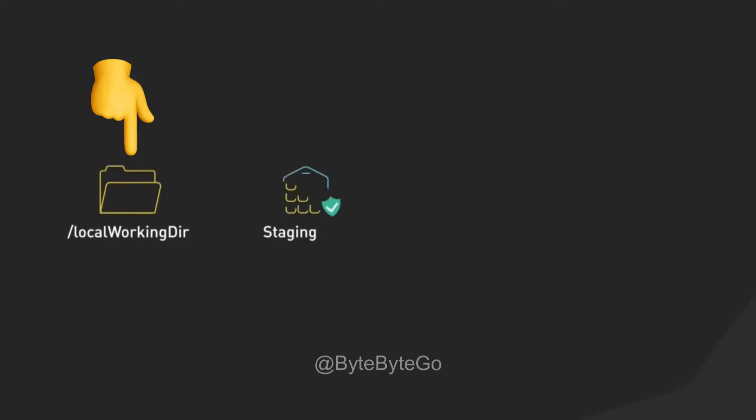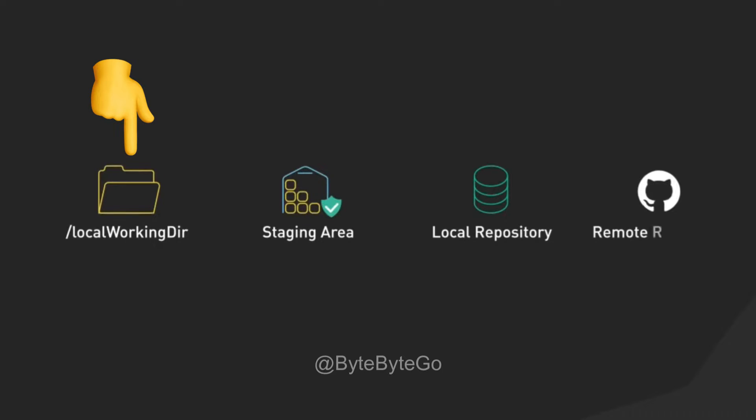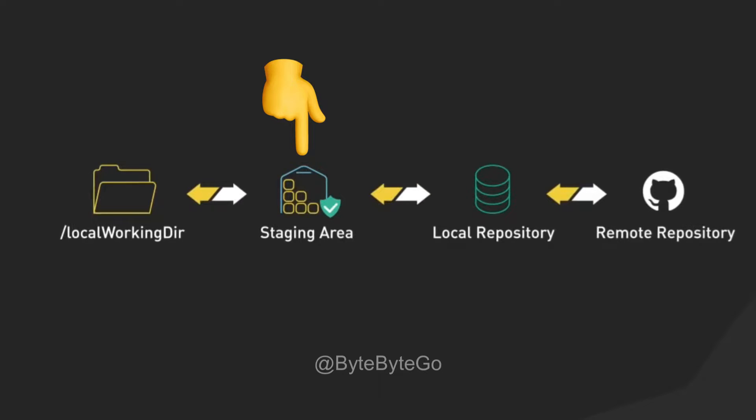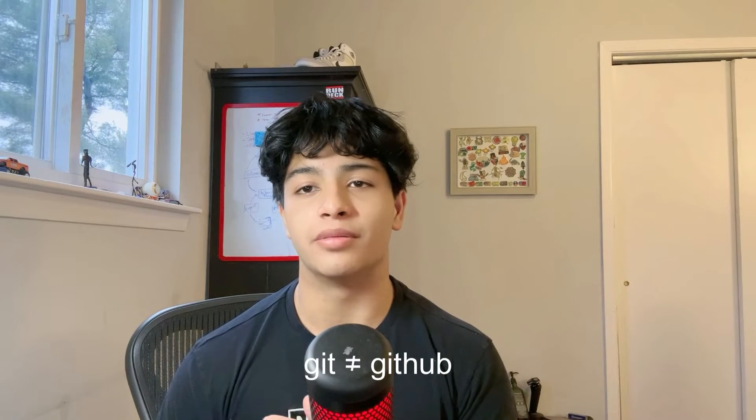In order to understand how GitHub works, we need to understand the stages of your code. Your code will start in your local system on a working directory. After this, there's the staging area, which is still on your local machine. Furthermore, you have your local repository, which is the progress right before you push changes to the cloud. And lastly, you have a remote repository, which is where GitHub comes into play — but more on that later.